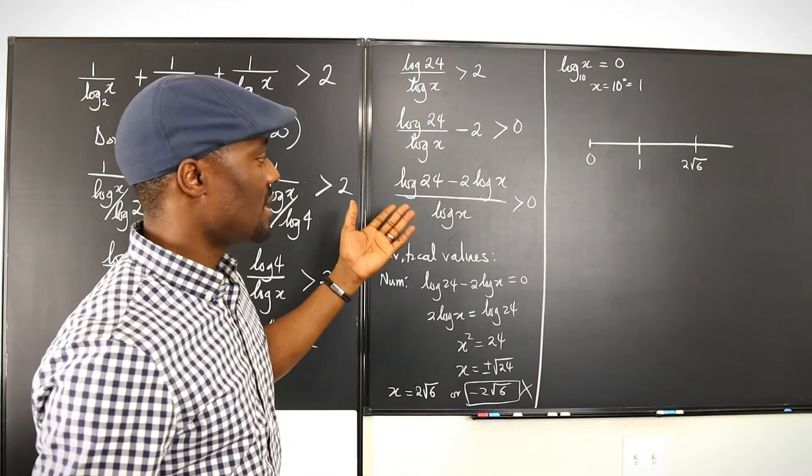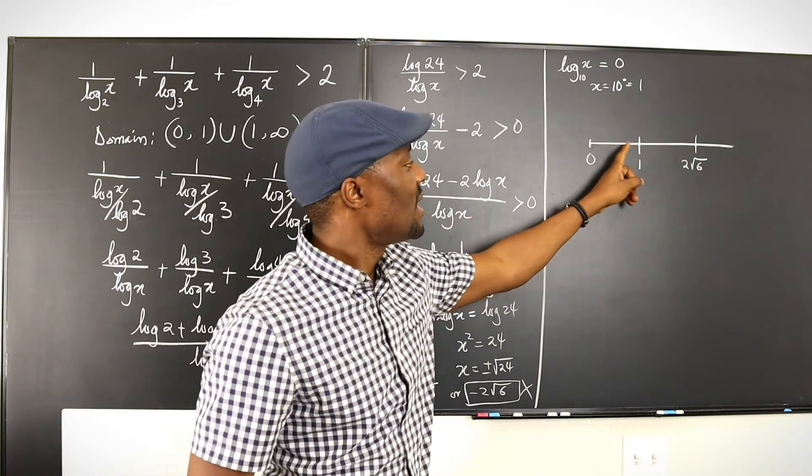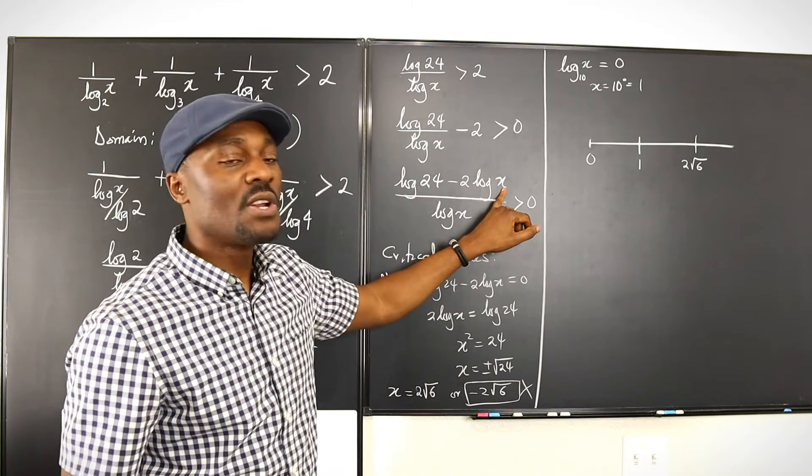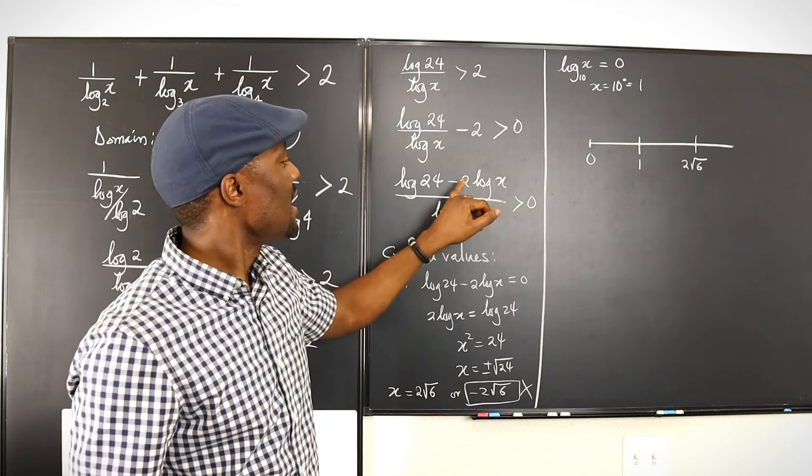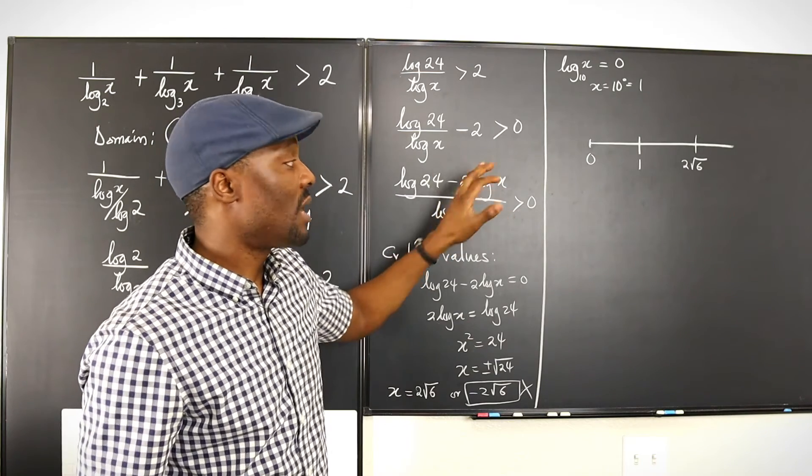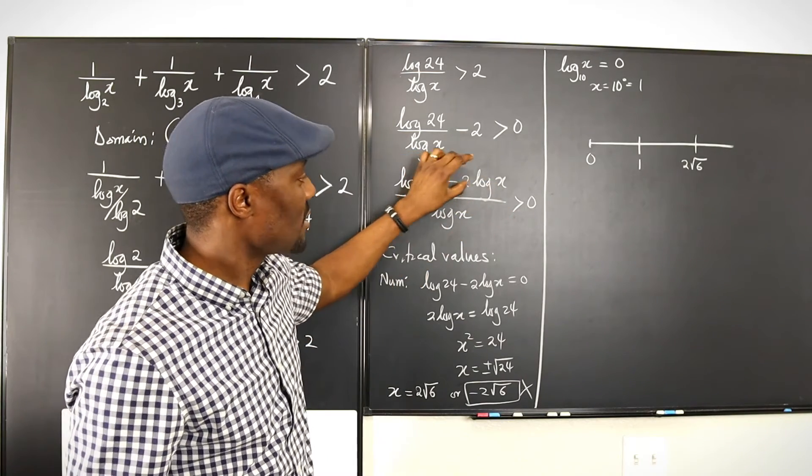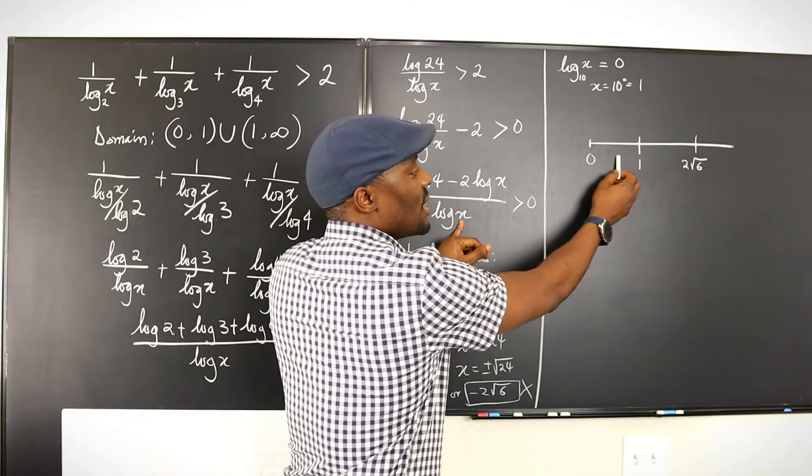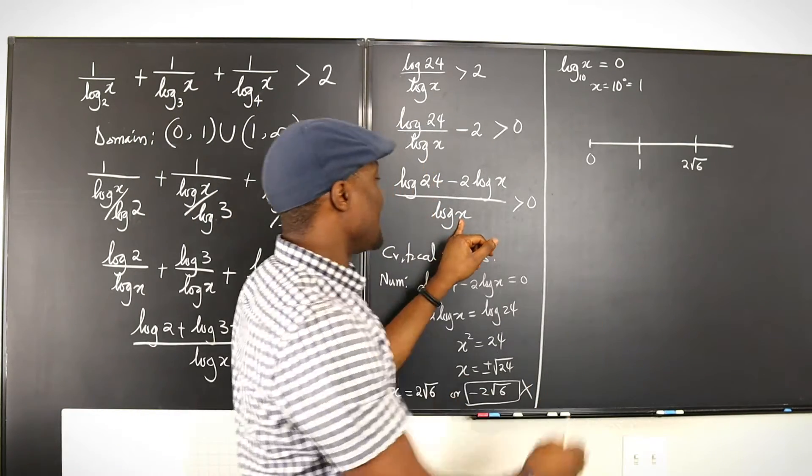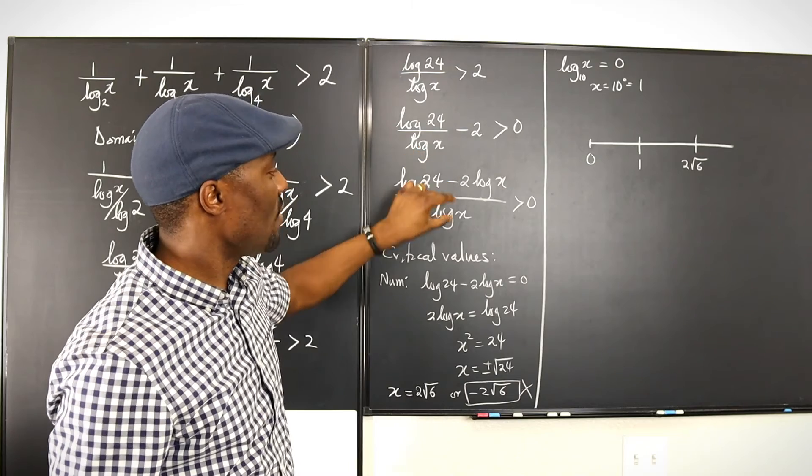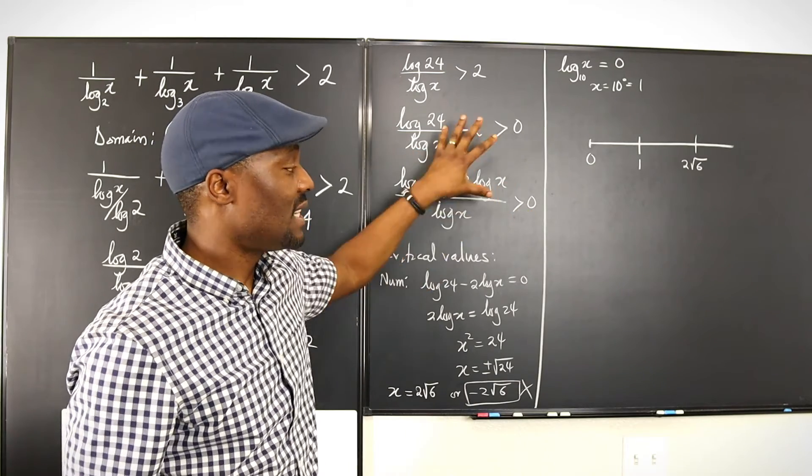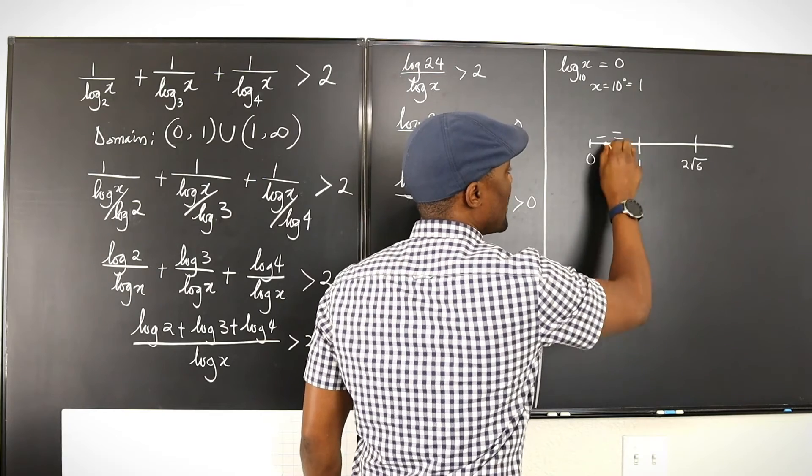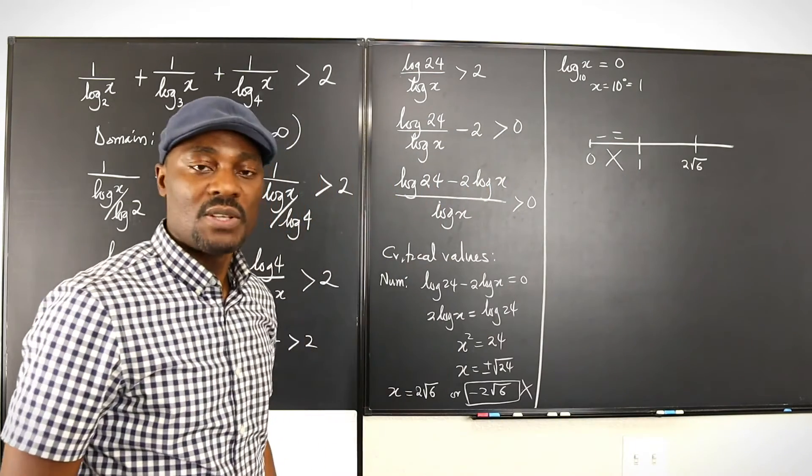Log 24 is a positive number. If we put in a number less than 1, let's say 0.5, the log of 0.5 is going to be negative. Negative times negative 2 is going to be positive. So you have positive plus positive over negative, which will give us a negative. And that means it's not greater than zero. So this area is negative. We cannot accept answers from this side.